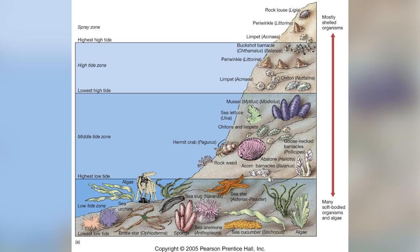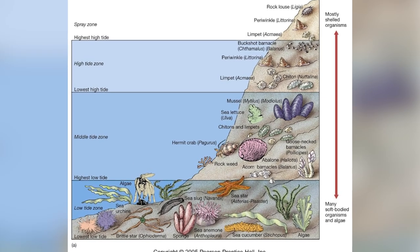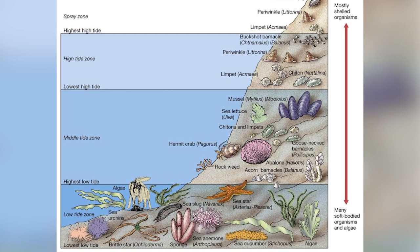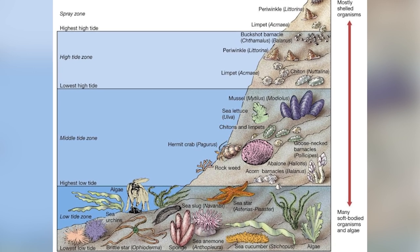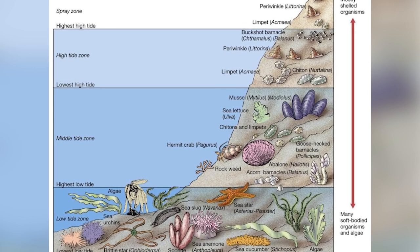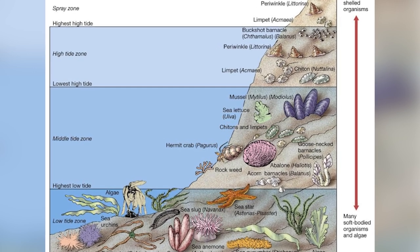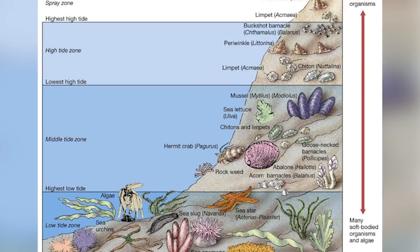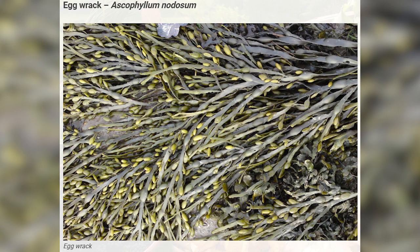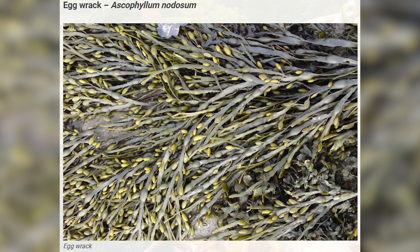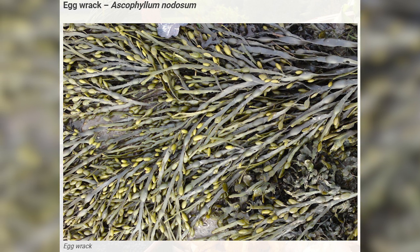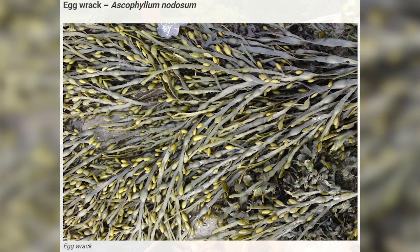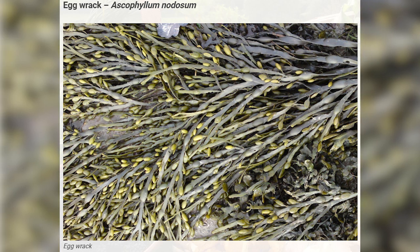Then comes the middle intertidal zone. In this zone, the tides ebb and flow twice a day. It is inhabited by a greater variety of both plants and animals, including sea stars and anemones, and brown seaweeds such as egg wrack and the red seaweed pepper dulse.